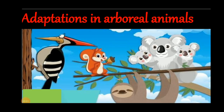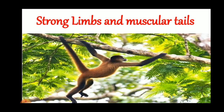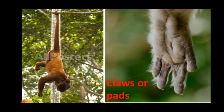Let us understand the adaptations in Arborial Animals. The first one is: they have strong limbs, meaning arms and legs, and a muscular tail to climb up and down the trees and branches. Remember, students, animals like monkeys use their tails to swing from trees. Second point: Arborial Animals have claws or pads which help them to grip the branches firmly while moving or sleeping.